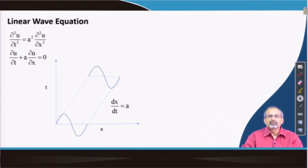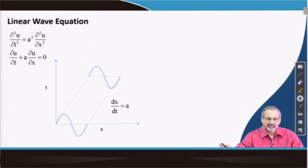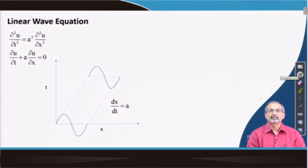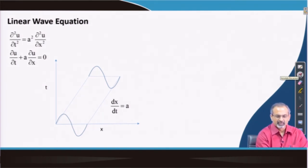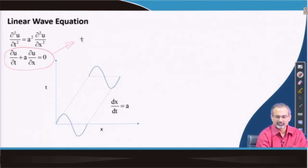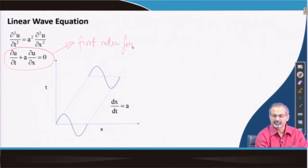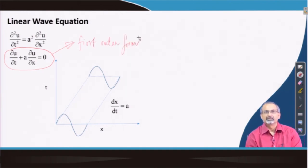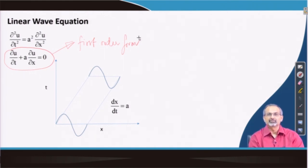But before we go into numerical schemes, this could be a good time to recapitulate some of the issues related to the physics of linear wave propagation. We can see that here the linear wave equation has been written in two forms. We will more often be discussing this form, which is often called as the first order form — the highest order of the derivatives that figure in this form of the linear wave equation is first order.